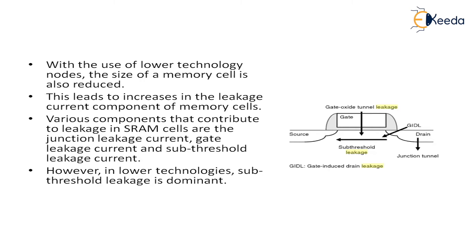What are the components contributing to leakage in SRAM cells? They are: junction leakage current, also called GIDL (Gate Induced Drain Leakage); gate leakage current through tunneling effect; and sub-threshold leakage current. Out of all these three leakage currents, the most dominant one is sub-threshold leakage current, which is most dominant among all the leakages in your SRAM cells.